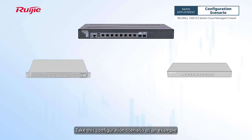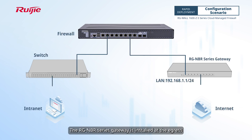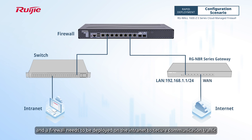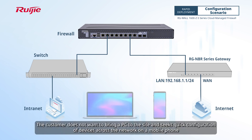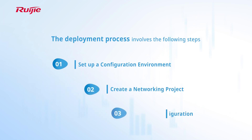Take this configuration scenario as an example. An enterprise network customer requires wireless coverage. The RGNBR series gateway is installed at the egress, and a firewall needs to be deployed on the network to secure communication traffic. The customer does not want to bring a PC to the site and seeks quick configuration of devices across the network on a mobile phone. The deployment process involves three steps: set up a configuration environment, create a networking project, and verify configuration.